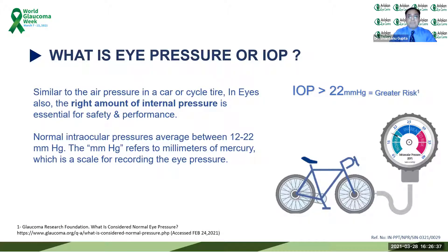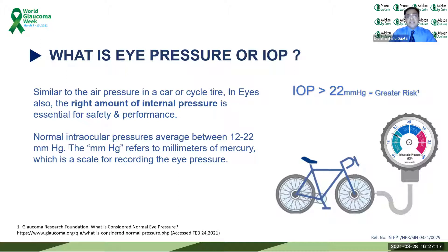Now, a very important aspect we must understand is what eye pressure is. Just like you inflate a tire and there is internal pressure inside it, or like the pressure inside a balloon, the eye also has an internal pressure. The normal intraocular pressure ranges between 12 to 22 millimeters of mercury — a scale used for recording eye pressure. Any pressure more than 22 millimeters of mercury is a high risk for glaucoma.